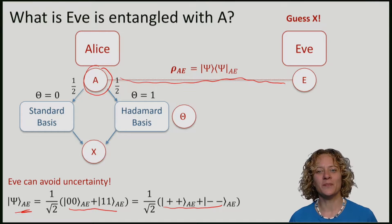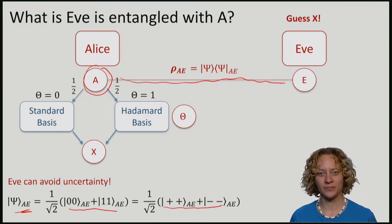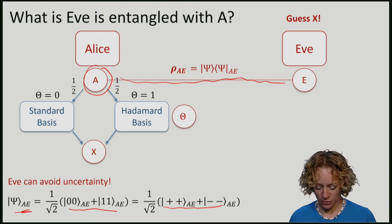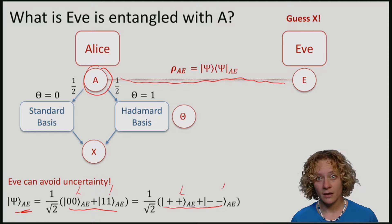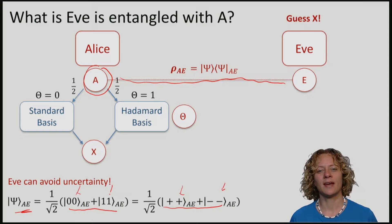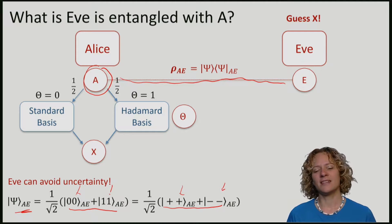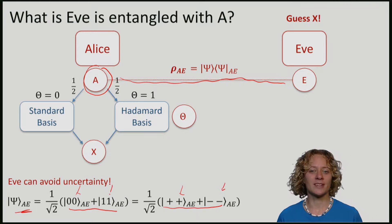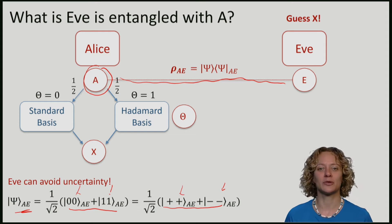All that Eve has to do is to wait until Alice announces which basis she has chosen, then Eve can measure her qubit E in the correct basis and gets precisely the same measurement outcome as Alice. She can guess x perfectly. This effect that entanglement reduces uncertainty has already been observed a long time ago by Einstein, Podolski and Rosen.